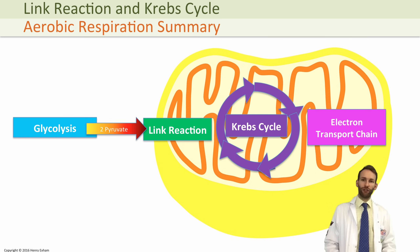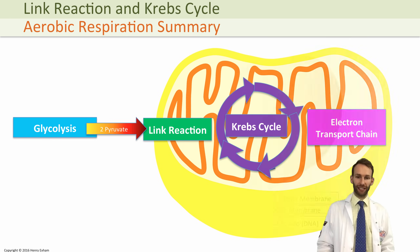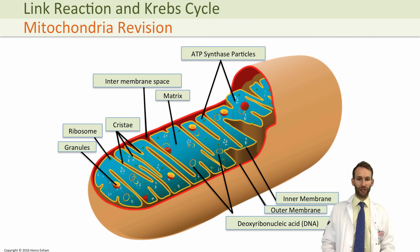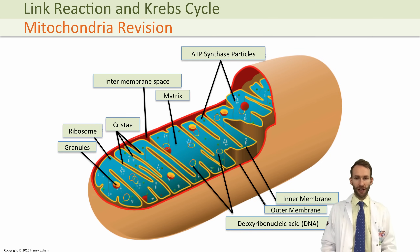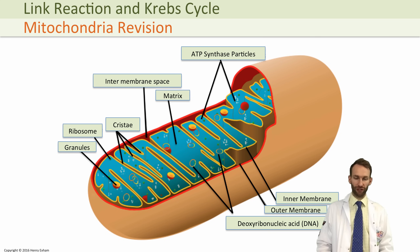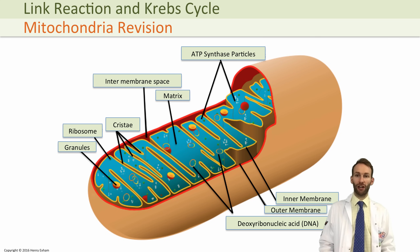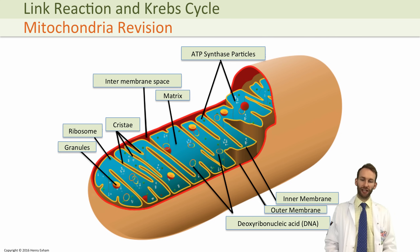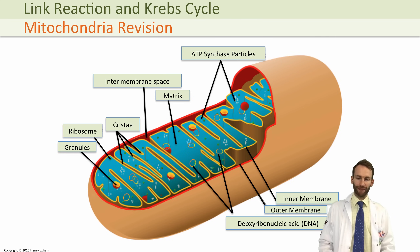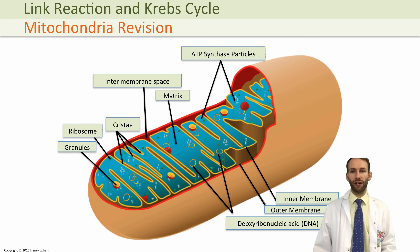You should be able to recall the basic structure of a mitochondria from your cell biology. It is a double membrane organelle. The inner membrane is filled with a fluid called the matrix, and it's in this matrix that the link reaction and the Krebs cycle are going to occur, because the matrix contains all the right enzymes and all the correct solutes for this reaction to happen.